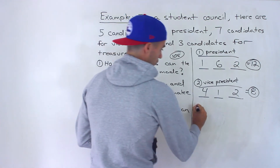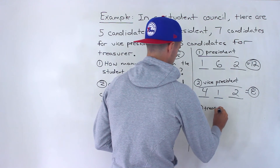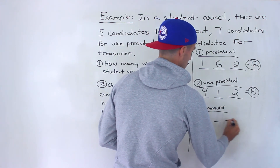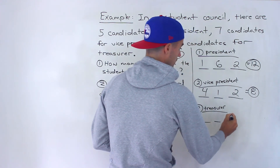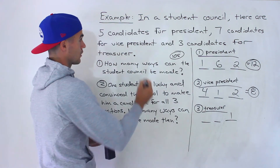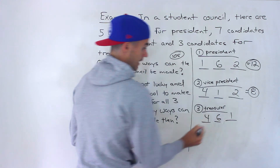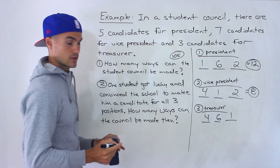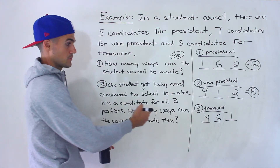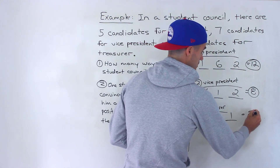Case three: the lucky student becomes treasurer — that position is spoken for, so that's one. There are four candidates left for president and six candidates left for vice president. So four times six times one gives us 24.